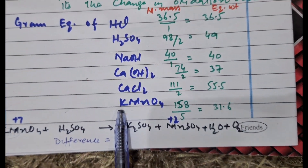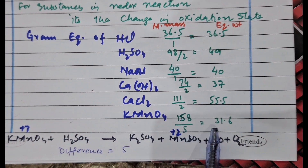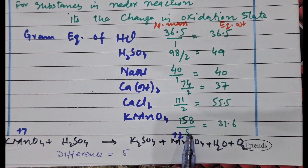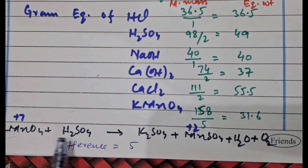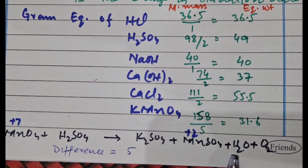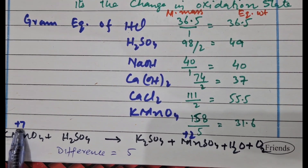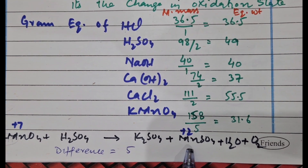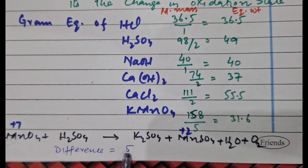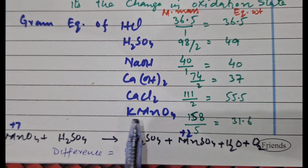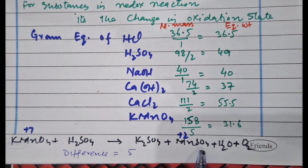Now here is a tricky case: potassium permanganate has a molar mass of 158 divided by 5, giving 31.6 gram equivalents. We divide by 5 because of the change in oxidation state. When potassium permanganate reacts with H₂SO₄, it gives potassium sulfate, manganese sulfate, H₂O and oxygen. The oxidation state of manganese goes from +7 to +2, a change of 5. So whenever dealing with redox reactions, find the change in oxidation state.